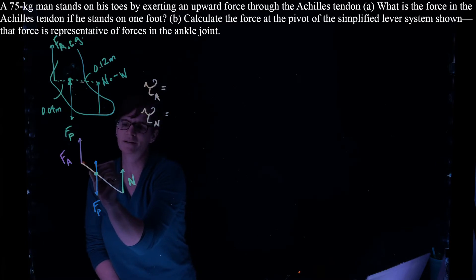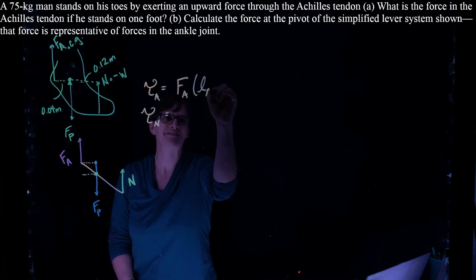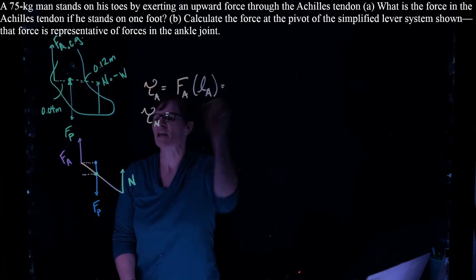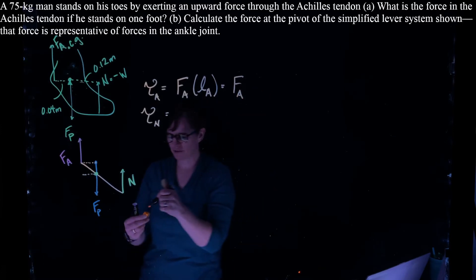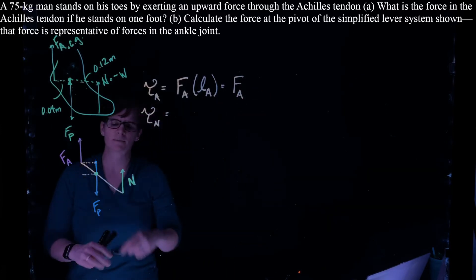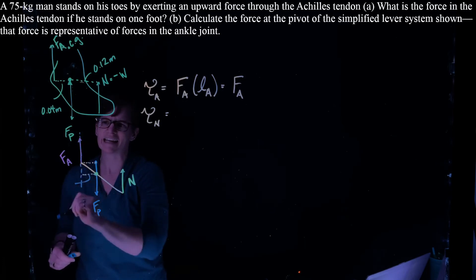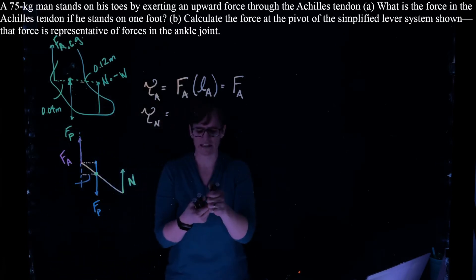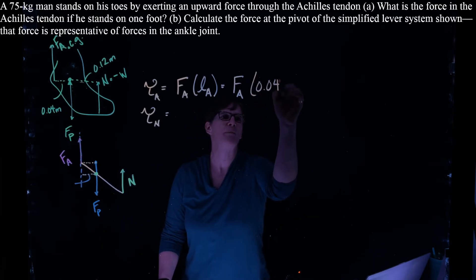Well, we know the force of the Achilles times the lever arm of the Achilles. The force of the Achilles, that's what we want to know. The lever arm, remember that is the distance between that pivot point and the line of action. So if this is our line of action, it's this distance, which is given in the problem as 0.04 meters.